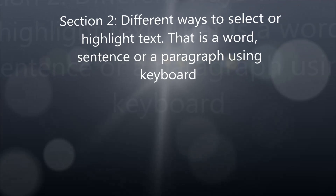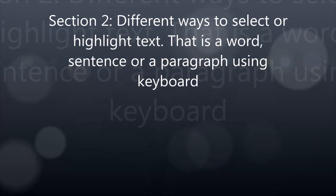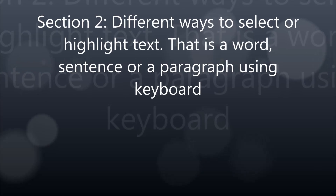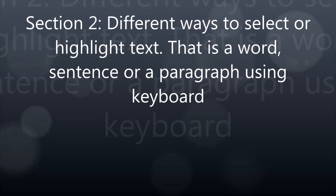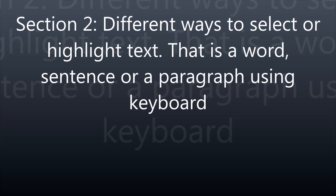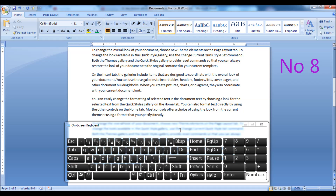Section 2: Different ways to select or highlight text — that is a word, sentence, or a paragraph — using the keyboard. Hold down the Shift key and press the left or right arrow keys to highlight text character by character.